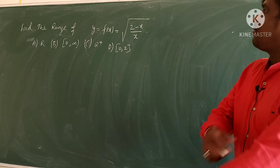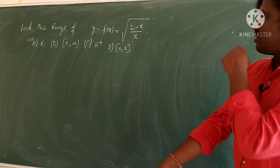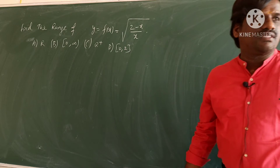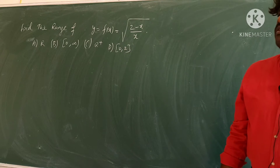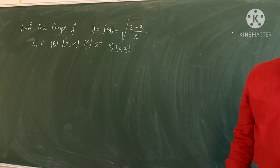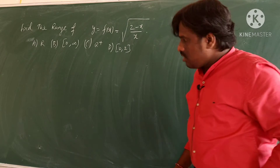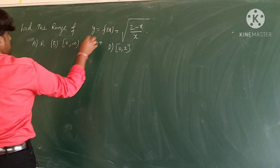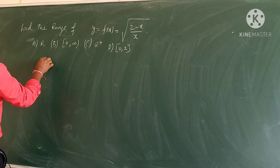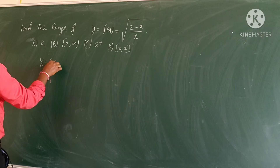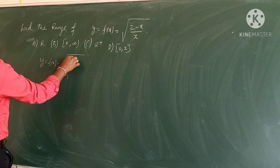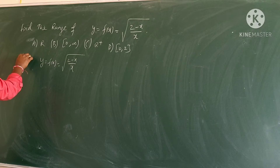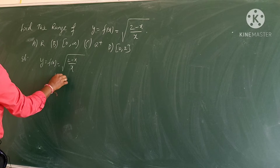The question is: find the range of y = f(x) = √((2-x)/x). We have to find the range of this function. We have discussed domain previously; now we are discussing range. The first condition is that the square root function is always greater than or equal to 0, so y should be greater than or equal to 0.